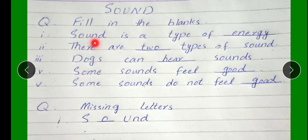Number 1: Sound is a type of dash. Sound kis ki qism hai? Energy E-N-E-R-G-Y Energy. Number 2: There are dash types of sound. Sound ki kitne aqsam hoti hain? Two T-W-O Two. Number 3: Dogs can dash sounds.